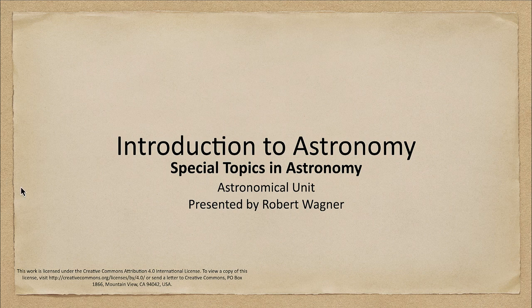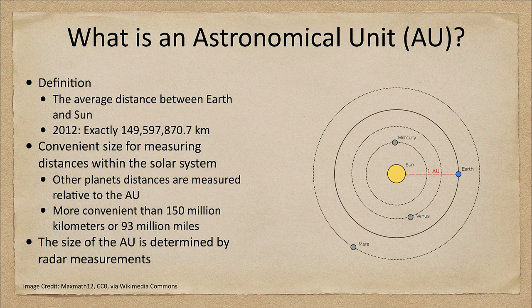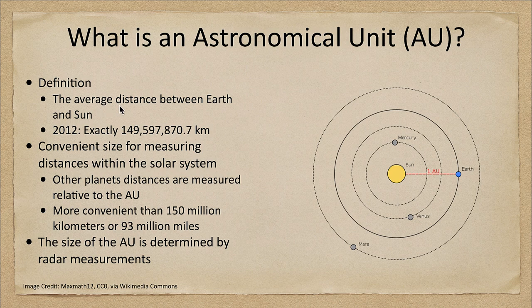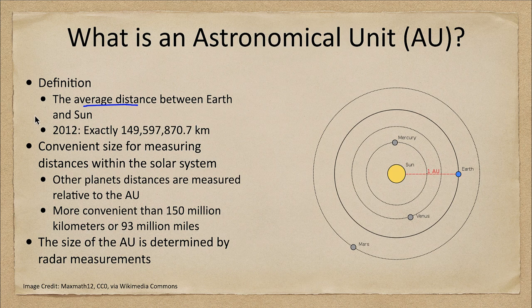So what is an astronomical unit? Well it is defined to be the average distance between Earth and Sun. So how far are we away from our sun? Well it's about 150 million kilometers or about 93 million miles.